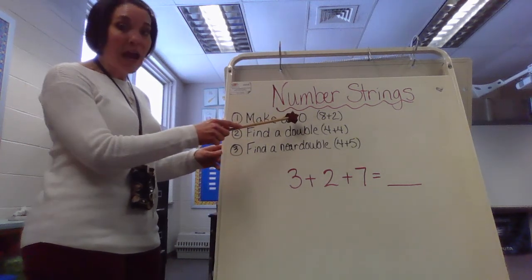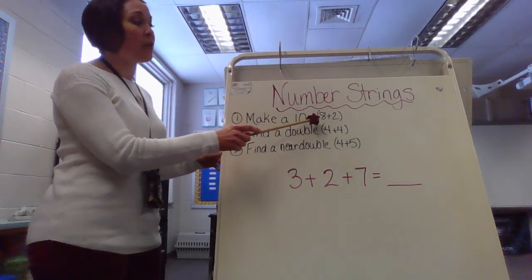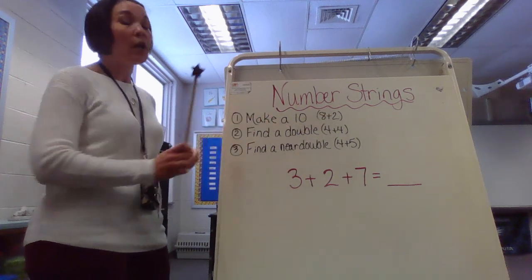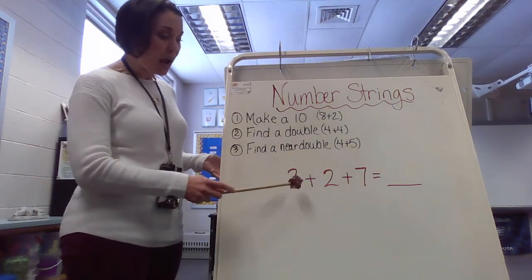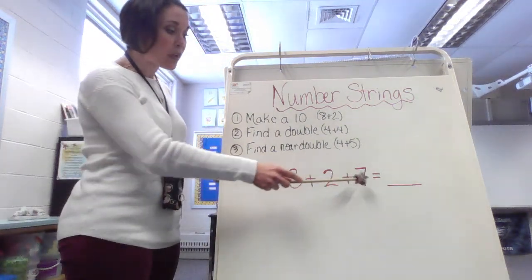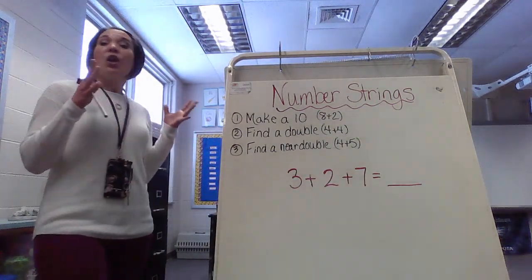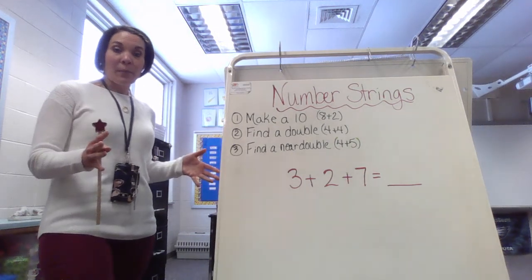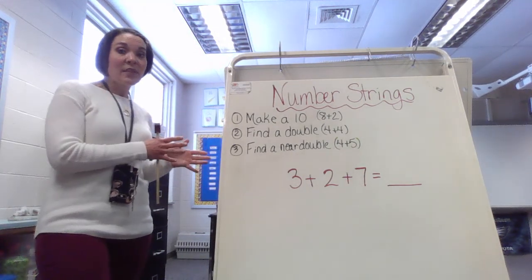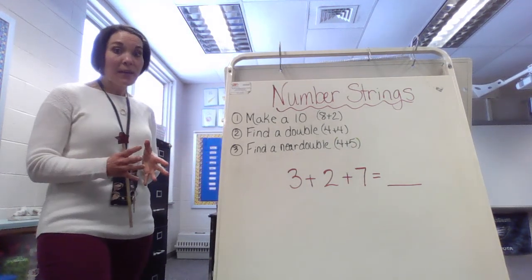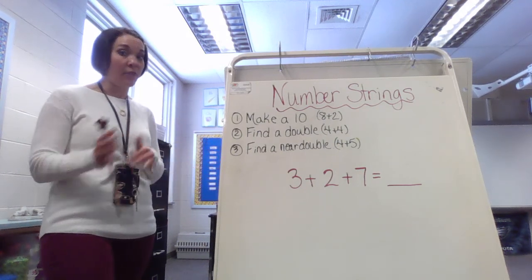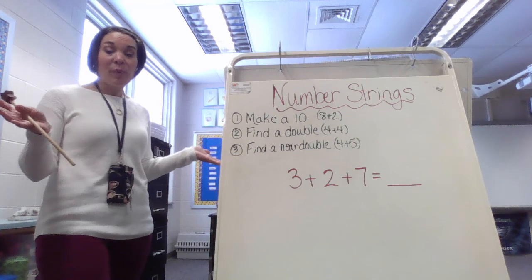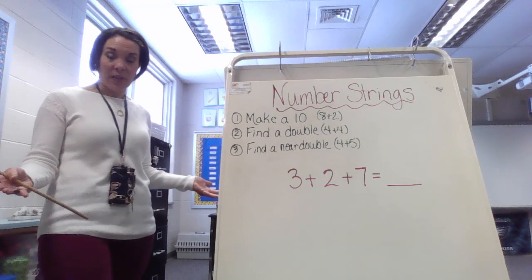The first one says make a 10, and I have an example of a tens fact, 8 plus 2. So you need to look at the numbers that you are adding. Here I have 3 plus 2 plus 7. You have to think, is there a way to make 10? Sometimes they might have it, sometimes they might not, and that's totally fine. You're not going to get every strategy in every number sentence because it all depends on the numbers.